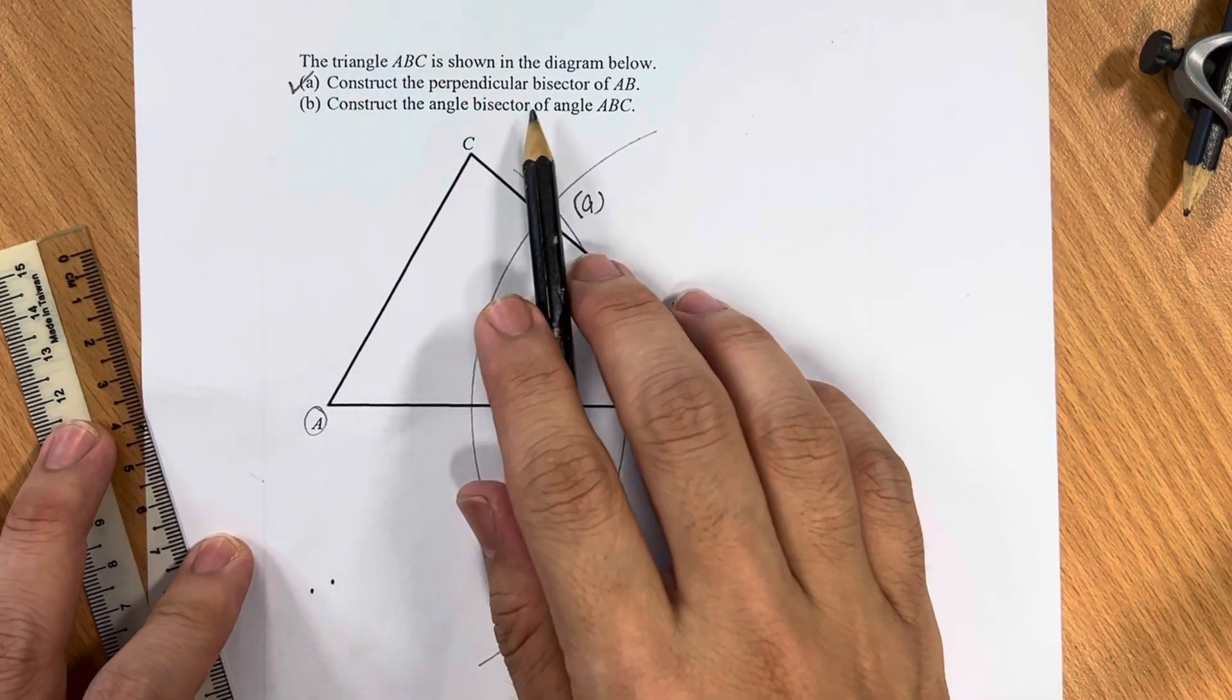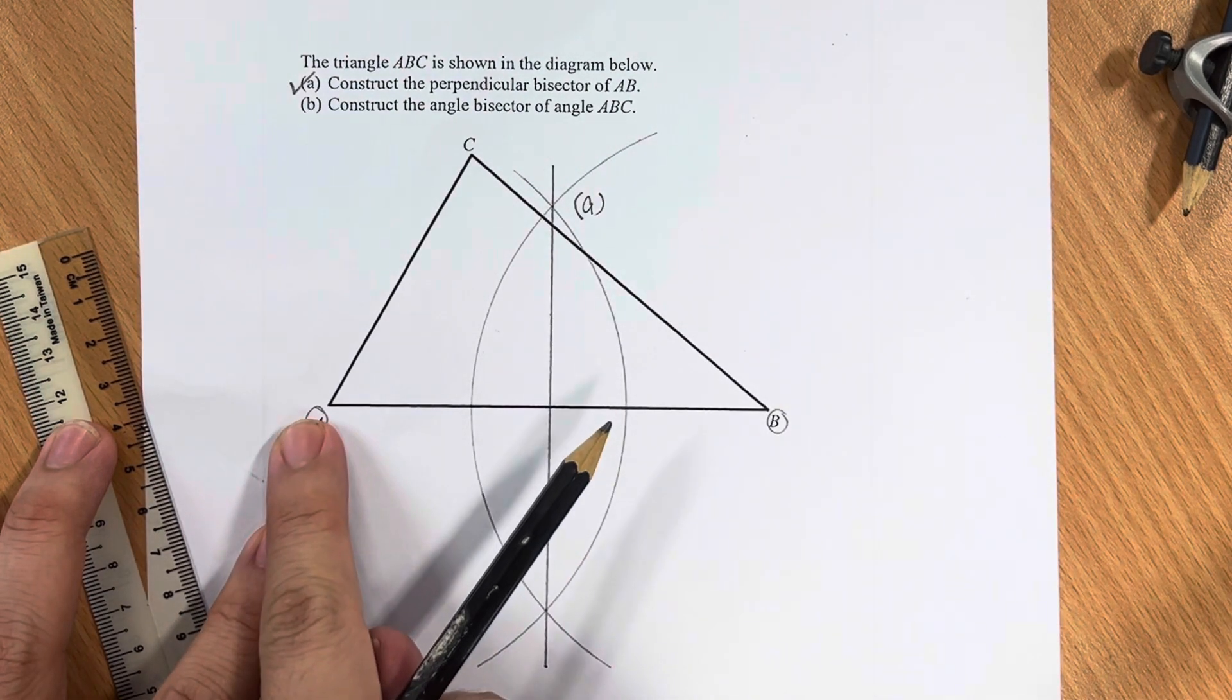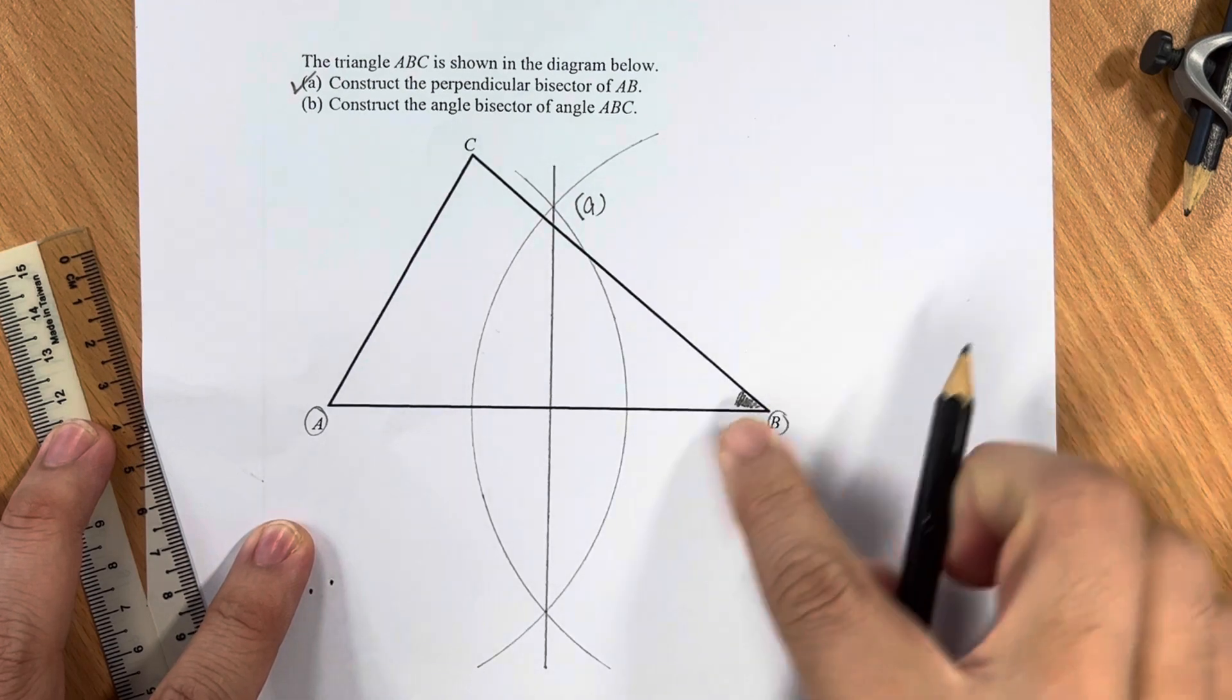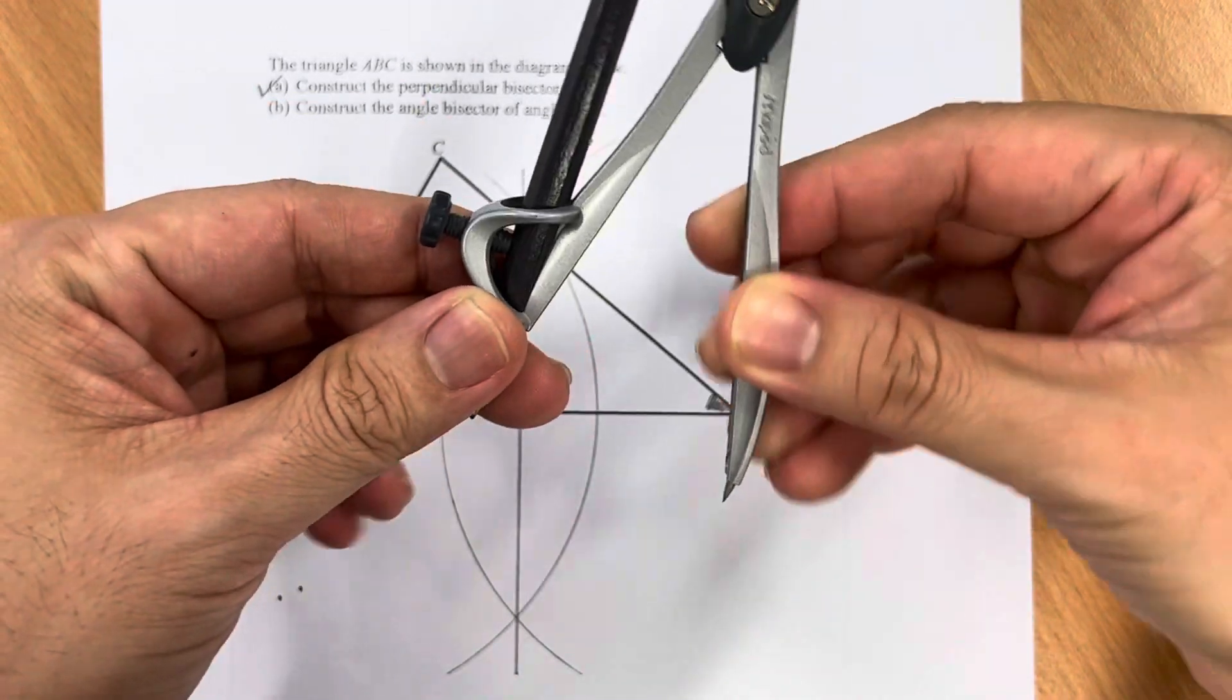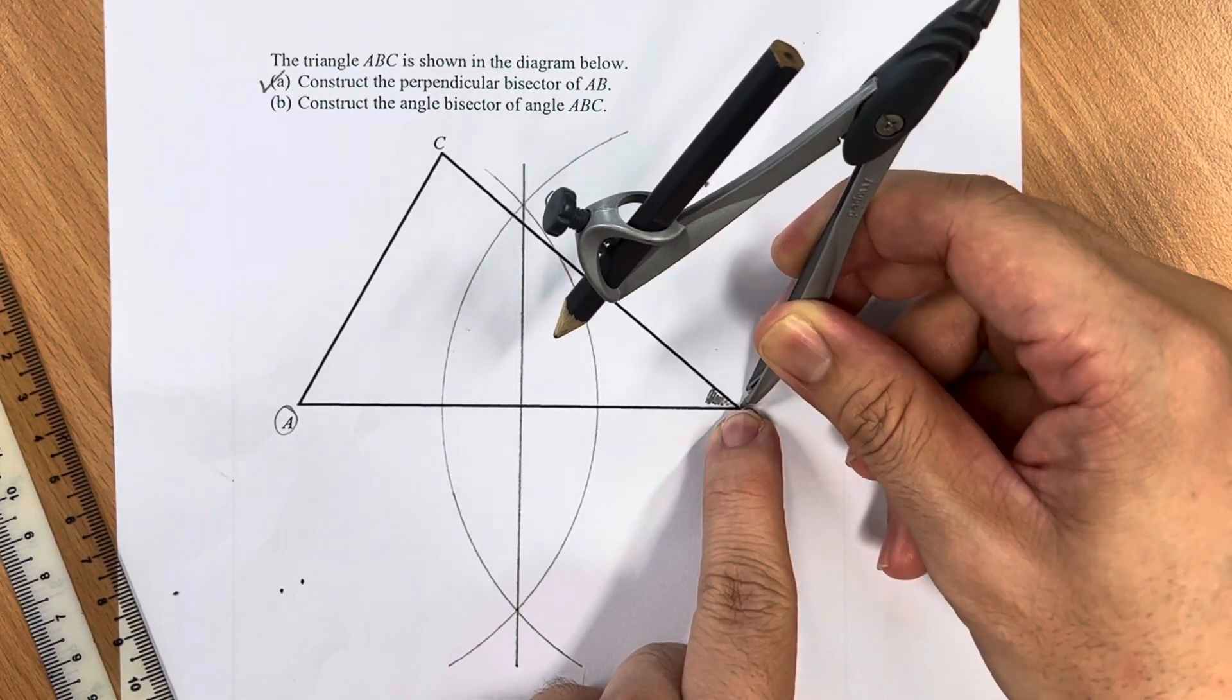Next, we are tasked to construct the angle bisector of angle ABC, which is this angle. So again, with a compass, place the pointed tip at the angle.